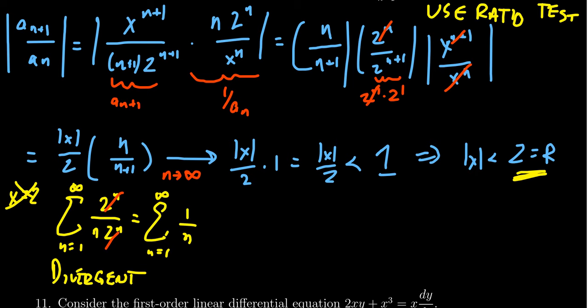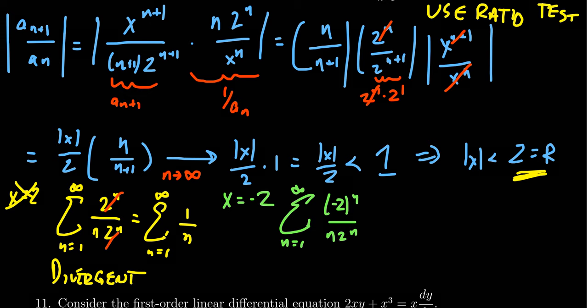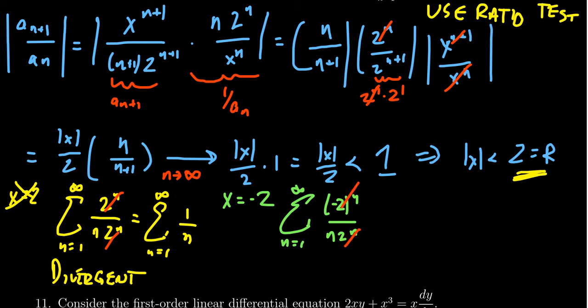Just because it didn't work for 2 doesn't mean it won't work for negative 2. You've got to try it individually. We get the sum n equals 1 to infinity of negative 2 to the n over n times 2 to the n. In this situation, as you cancel out the 2 to the n's, you're left with negative 1 to the n in the numerator.